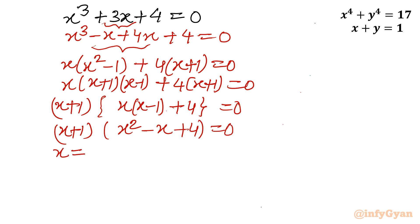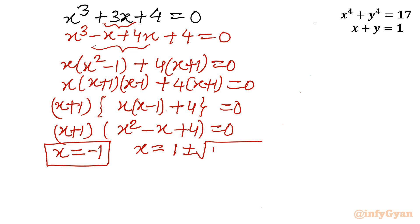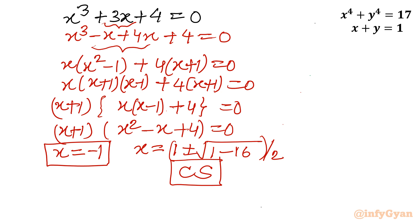From (x+1) = 0, we get x = −1. Solving x² − x + 4 = 0 using the quadratic formula gives a discriminant of 1 − 16 = −15, which is negative, so solutions are complex and rejected. Therefore from Method 2, the accepted real roots are x = 2 and x = −1.